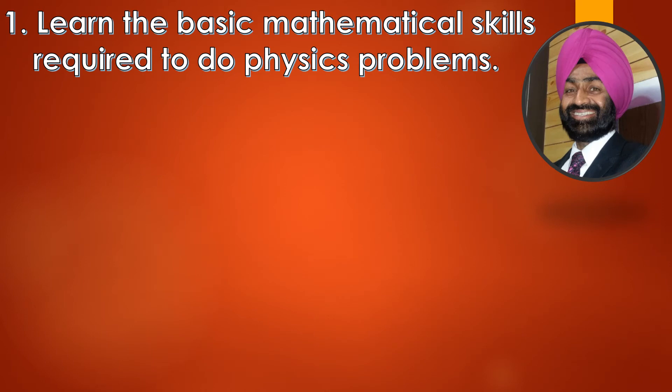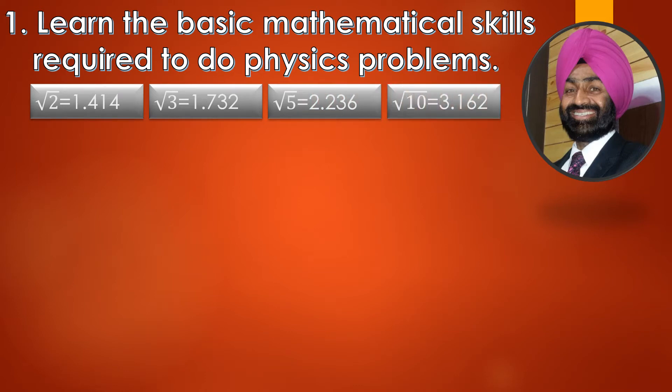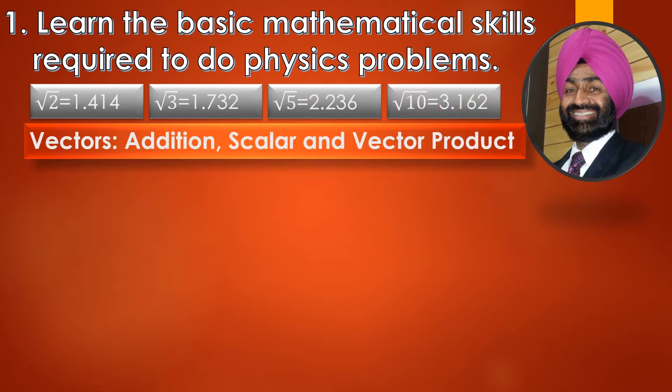First of all, you must learn the basic mathematical skills required to solve problems in physics. Like you must know the value of root 2, the value of root 3 — 1.732 — and if possible, go up to root 5 as well as up to root 10. Further, lots of questions are based on vectors. You must know how to add vectors, how to manage scalar quantities, how to take scalar and vector products.